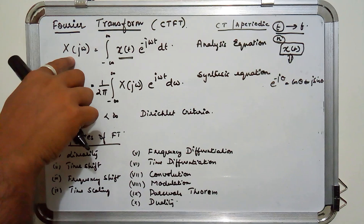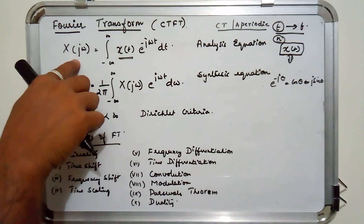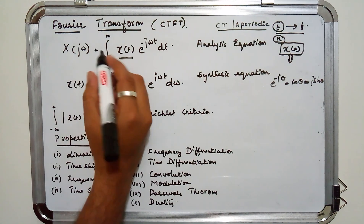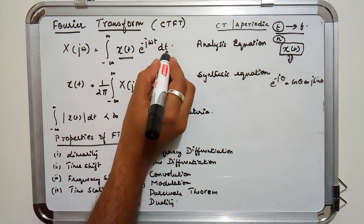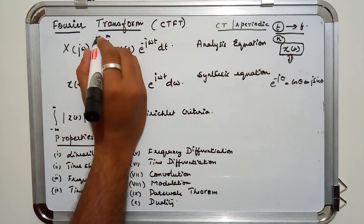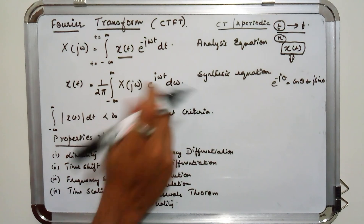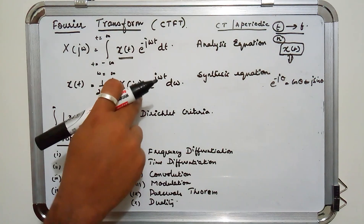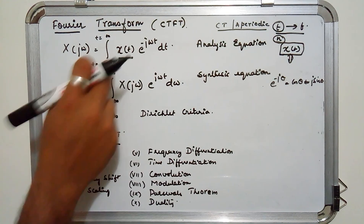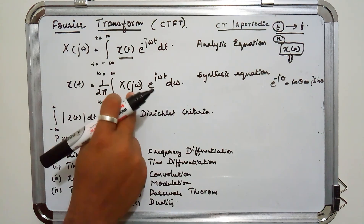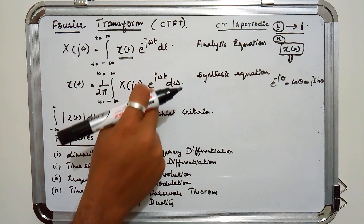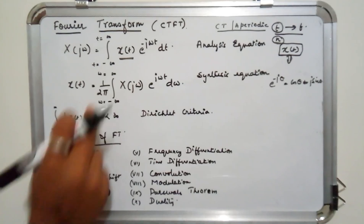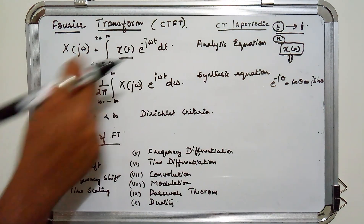If we want to get back x(T) from the Fourier transform signal, this is the equation used. It is (1/2π) times the integral from minus infinity to plus infinity. Here, since we are integrating with respect to T in the analysis equation, the limit is T = −∞ to +∞. For the synthesis equation we integrate with respect to ω, so the limit is ω = −∞ to +∞. We take x(jω), the Fourier transform of x(T), multiply it by the positive complex exponential e^(jωT), integrate with respect to ω, and divide by 2π to recover the original signal x(T).